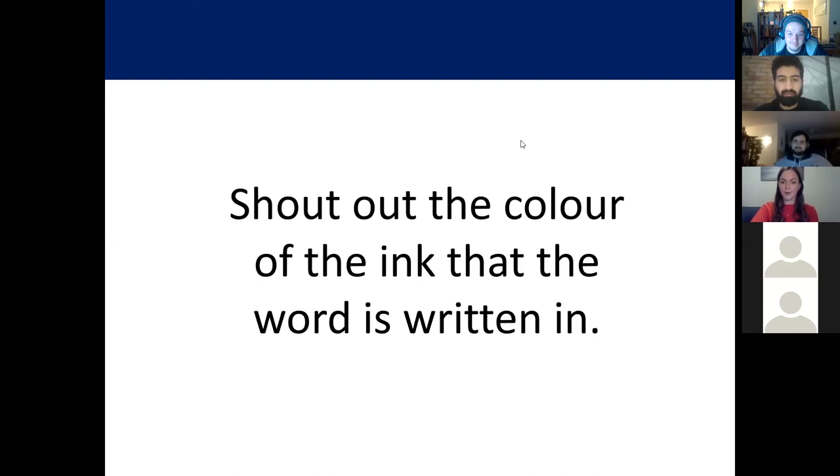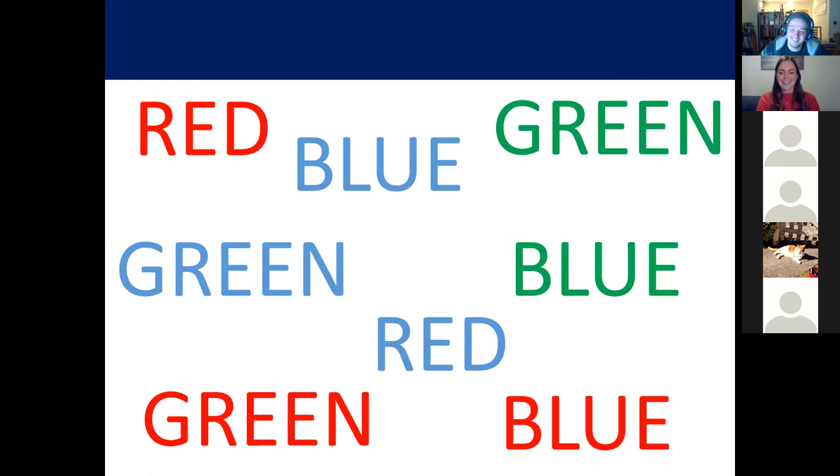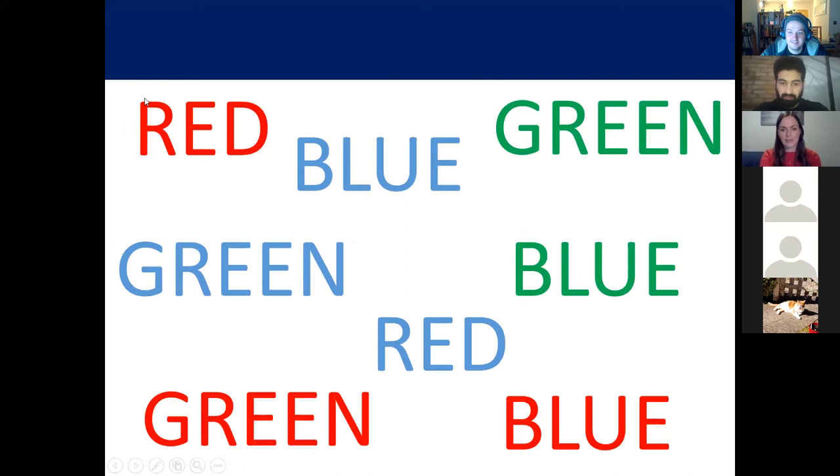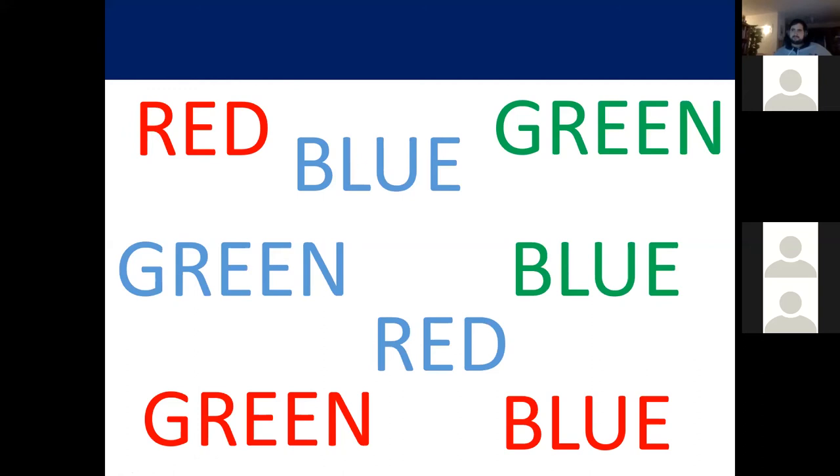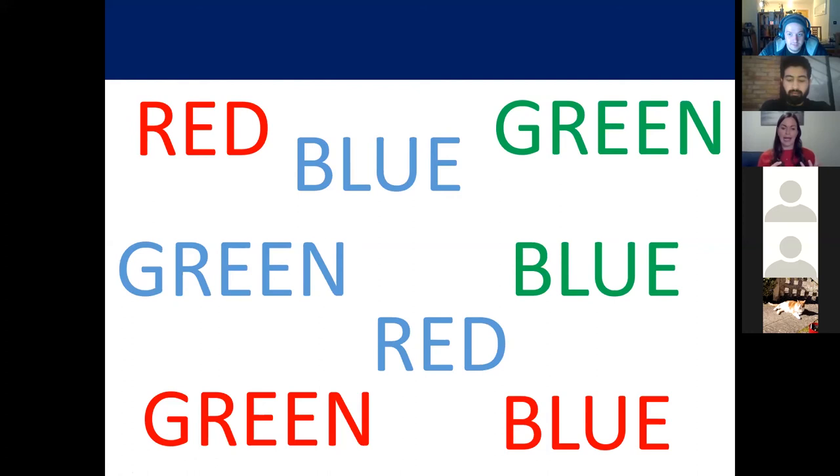[Stroop test execution] This is the Stroop task. This is a classic kind of neuropsychological test. Initially this was probably pretty easy for most of you because the words were written in the same ink and the same color ink as what the word says. So red is written in the color red. But then as we went through, I did play a bit of a trick on you. It was a bit sneaky. I changed the color of the word so your brain was confronted with this problem: do I say the word as it's written or do I use the color?